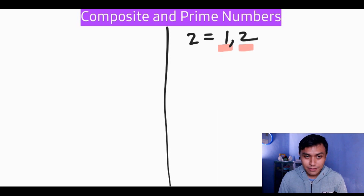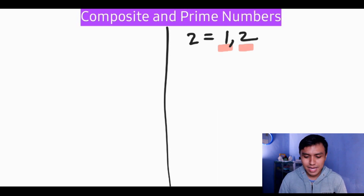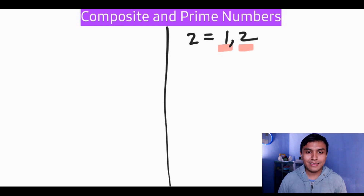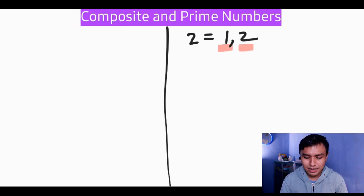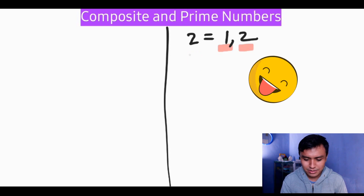Let's move to number three. Do you know the factors of three? The factors of three are one and three, so we'll put that number in the prime numbers column.